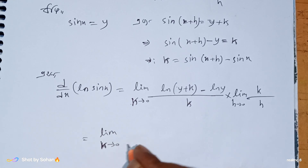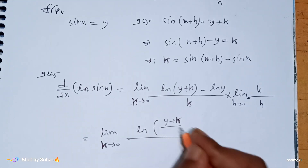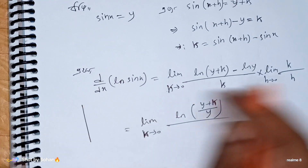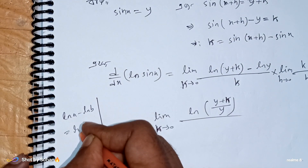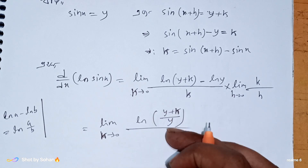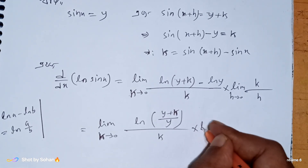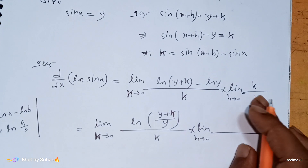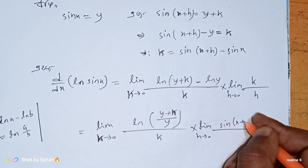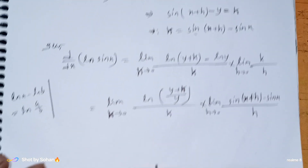k tends to 0. Applying ln a minus ln b equals ln(a/b): ln(y plus k) minus ln y equals ln((y plus k)/y). So we have limit k tends to 0 of ln((y plus k)/y) divided by k, which equals limit k tends to 0 of [sin(x plus s) minus sin x] divided by k.